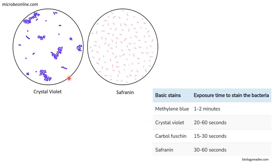When you observe, if your culture consists of cocci and you used crystal violet, you may see an image like that; if you used safranin with rod-shaped bacteria, you may see something like this. There are four stains you can use for monochrome staining: methylene blue with an exposure time of 1 to 2 minutes, crystal violet 20 to 60 seconds, carbol fuchsin 15 to 30 seconds, and safranin around 30 to 60 seconds. Remember, you use only one stain, and the maximum exposure time is about 1 minute.